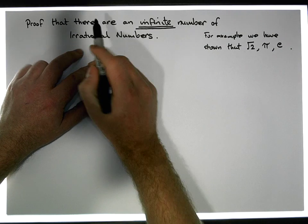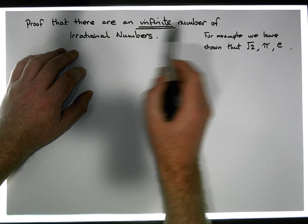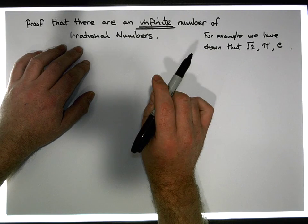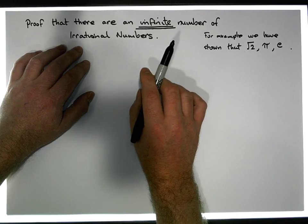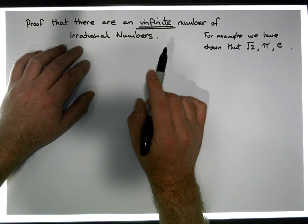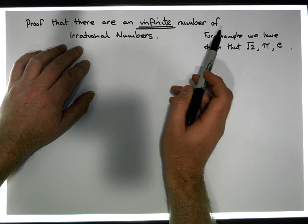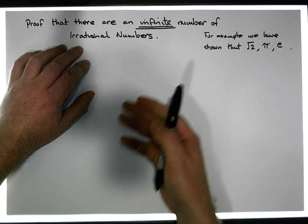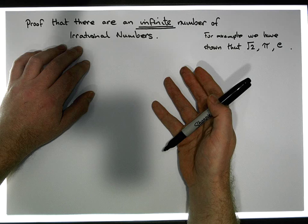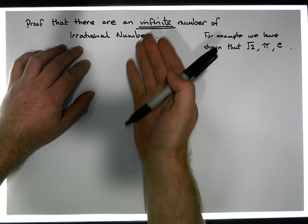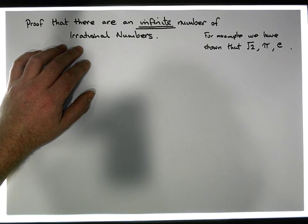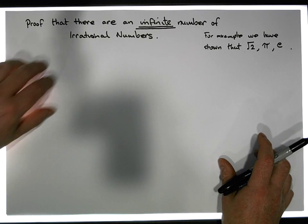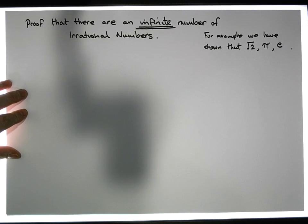What I'd like to show in this particular proof is that there are in fact an infinite number of irrational numbers. Now this proof is actually going to show that there's a countable number of irrational numbers — I'm not showing that the irrational numbers are an uncountable set. All we're going to show is that it's infinite, and at minimum it's countably infinite. It actually might be even more than countably infinite, but we're not going to show that proof.